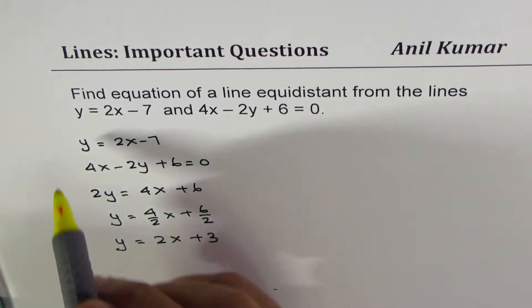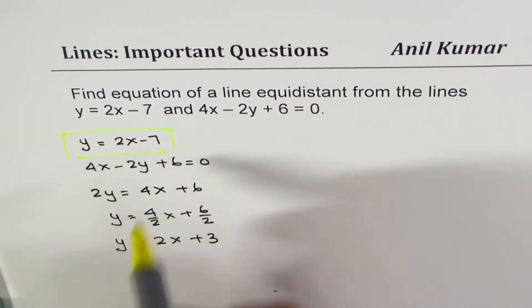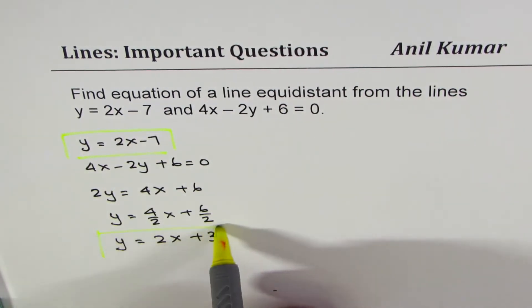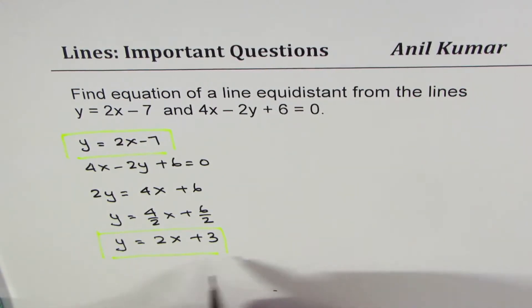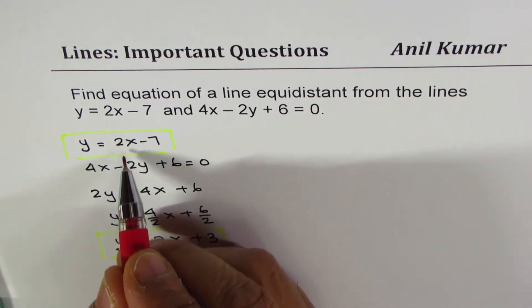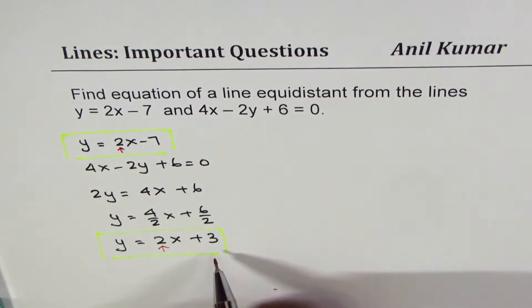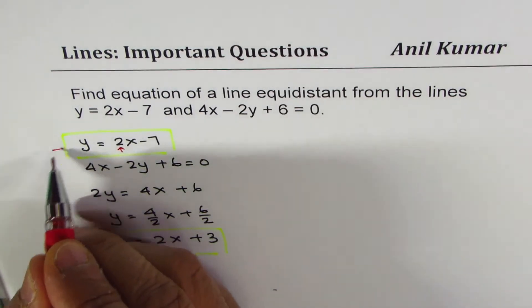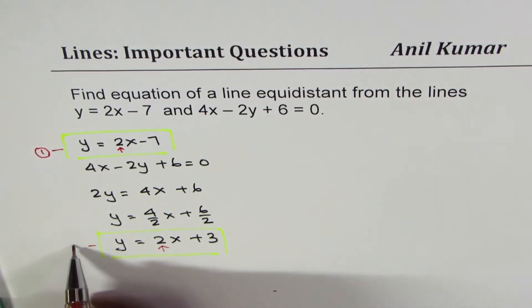As you can see, these two equations are parallel. They represent parallel lines, since their slope is 2. So slope in both is 2 and they have different y-intercepts. So we are talking about these two lines, 1 and 2, and these are parallel lines.